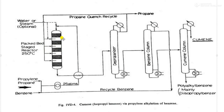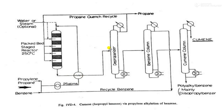The packed bed reactor has a cold shot arrangement, which means that cold propane from the distillation column is added at every reactor stage with the product stream to control the temperature. Propylene acts as the limiting reagent and undergoes conversion. Propane controls the reaction temperature around 250 degrees Celsius, after which the vapors are cooled using the heat exchanger.